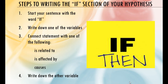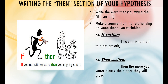When writing your hypothesis, start your sentence with the word 'if.' The 'if' part of your sentence is where the independent variable always goes. For example: if water affects plant growth, then the more you water plants, the bigger they will grow. Or: if you run with scissors, then you might get hurt. Running with scissors is what you're changing — the independent variable. What depends on running with scissors? You getting hurt — that's your dependent variable.